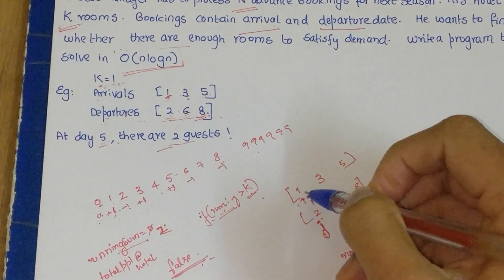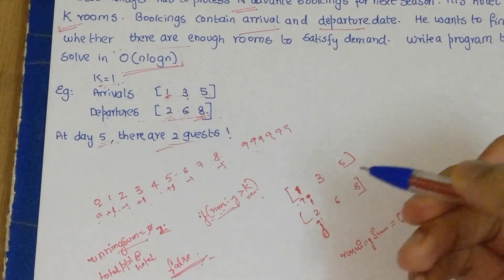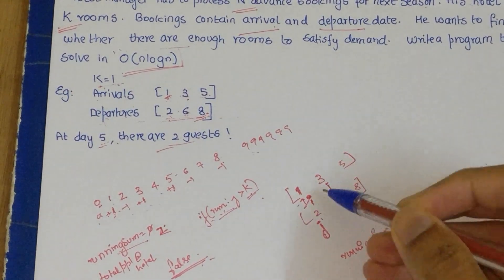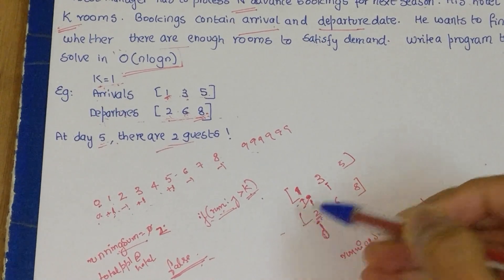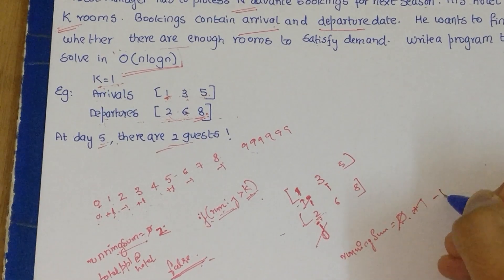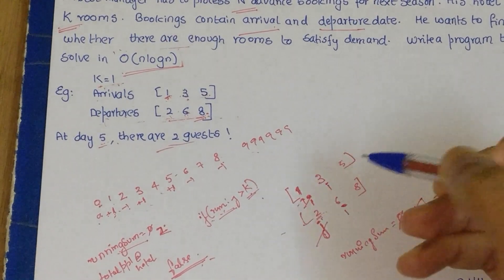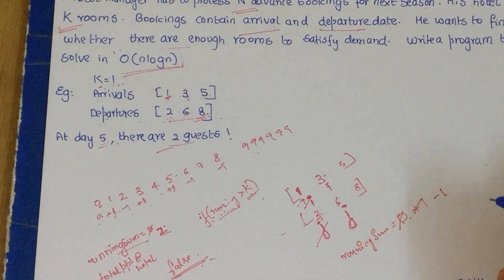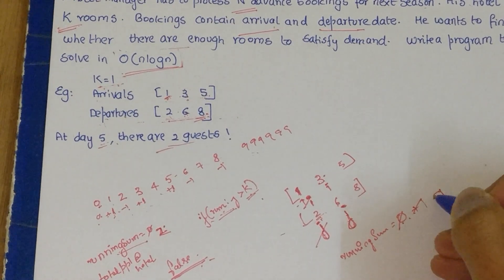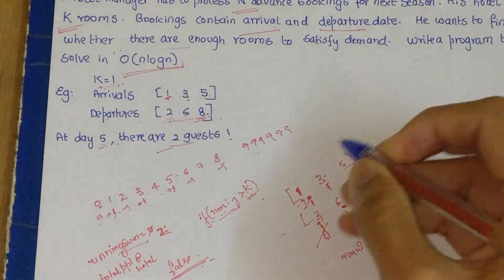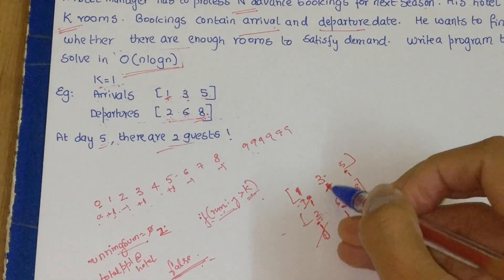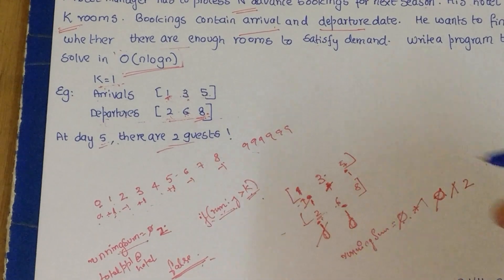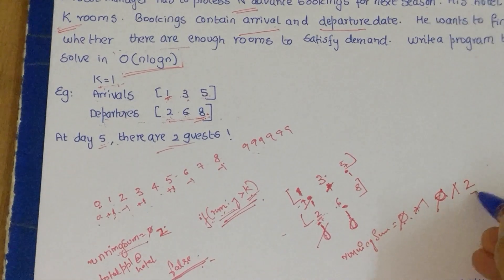At each step, we compare the current elements pointed to by i and j and pick the smaller one. If arrivals[i] is smaller, we increment the running sum by +1 and advance i. If departures[j] is smaller, we decrement by -1 and advance j. Starting: 1 < 2, so +1 (sum=1), i moves to 3. Then 2 < 3, so -1 (sum=0), j moves to 6. Then 3 < 6, so +1 (sum=1), i moves to 5. Then 5 < 6, so +1 (sum=2). At each step we check if running sum > K. Here sum=2 > K=1, so we return false. If we parse both arrays completely without exceeding K, we return true.